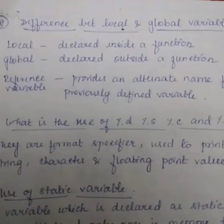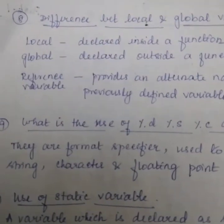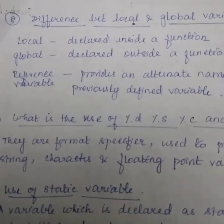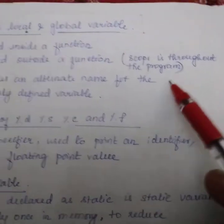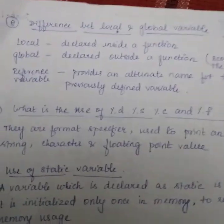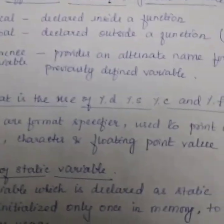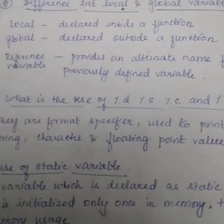Next question, question 8, difference between local and global variable. Local variable declared inside a function and global variable declared outside a function. In global variable, the scope is throughout the program. It is not restricted. Another thing, reference variable. The reference variable provides an alternate name for the previously defined variable.